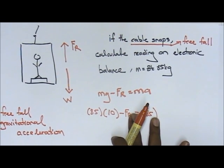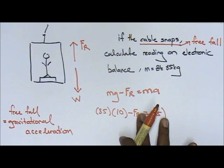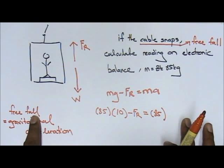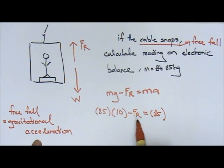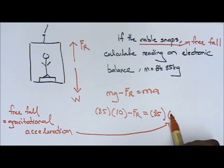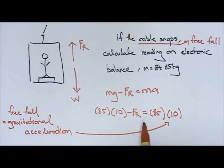Let me move the board so you can see it. If they say free fall, it means gravitational acceleration, and gravitational acceleration is equal to 10. If it's 9.8, then 9.8; if it's 10, it's 10.